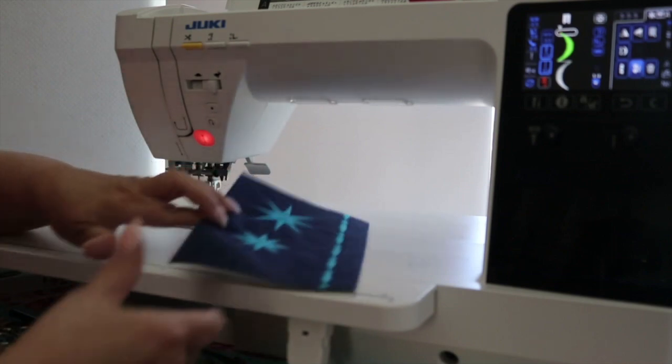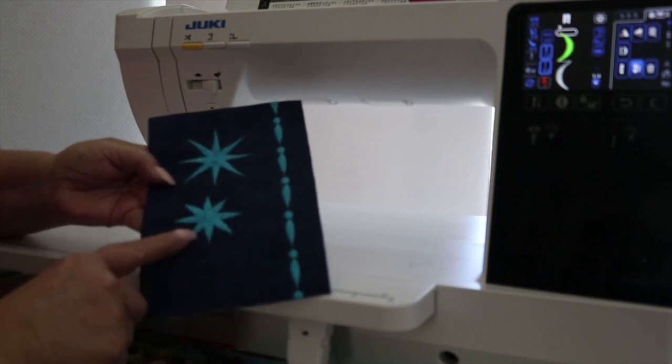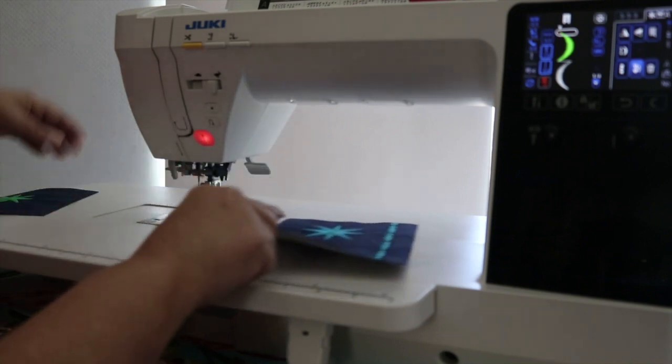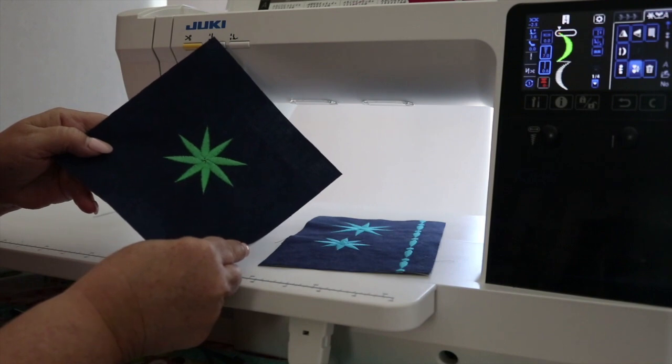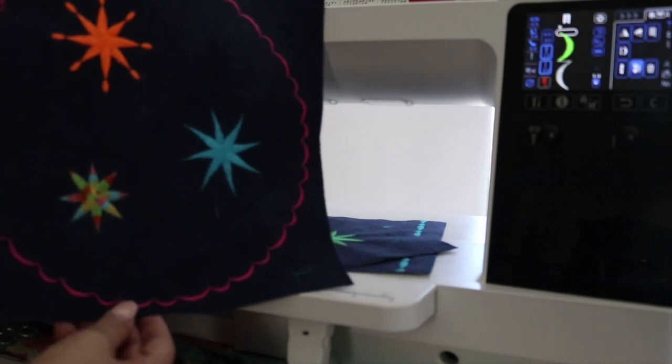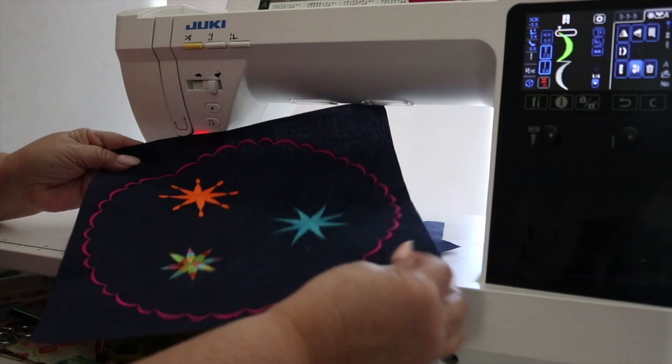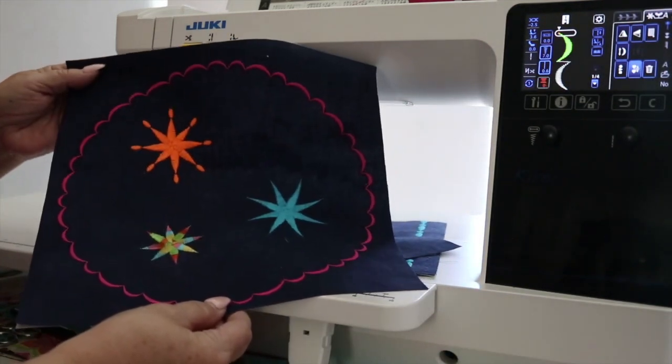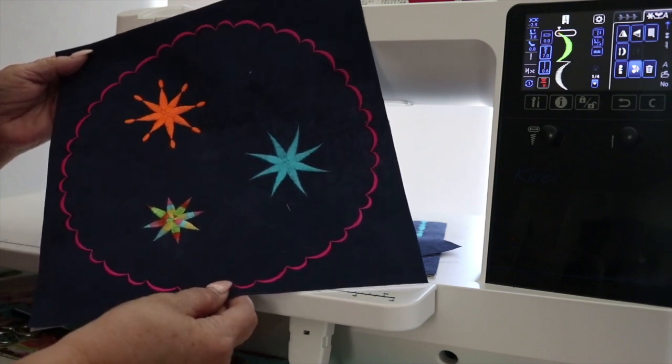Here are a few patterns that I have created using the elongation feature and using the elongation feature in a combination pattern as well. Here's another pattern. You can create anything that your imagination will allow. I did a combination of the scallop with the elongation. I did it in a circular pattern and then I put some of those starburst patterns in the center.